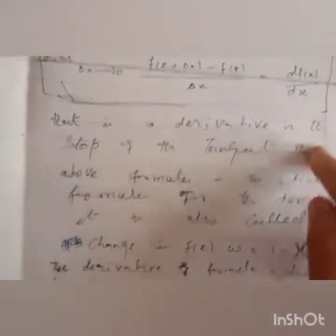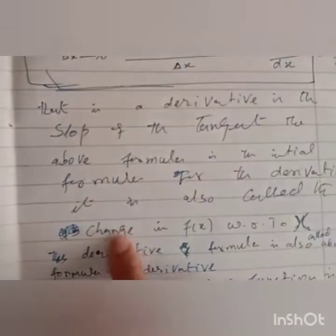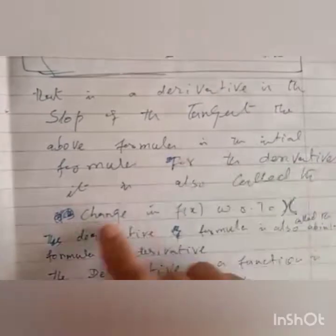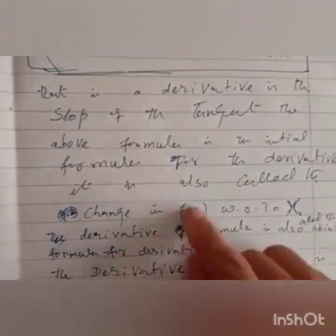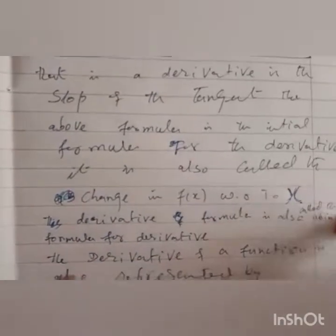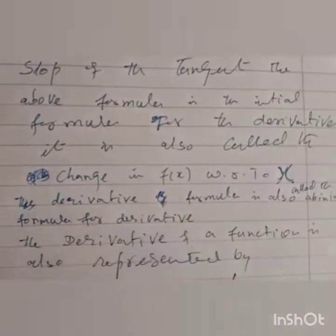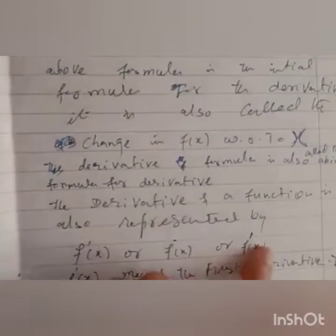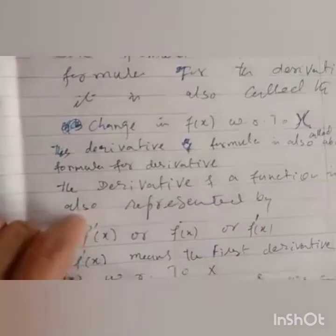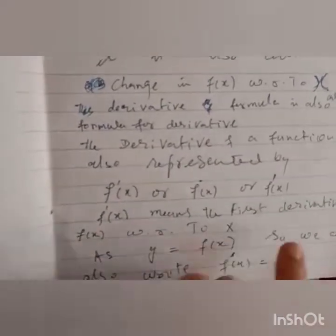The derivative is the slope of the tangent. The above formula is the initial formula for derivatives, also called the ab initio formula for the derivative. The derivative of a function is also represented by a prime (dash) on the function, or a dot on the function — f'(x) or f⁽¹⁾(x), where the superscript 1 means the first derivative.